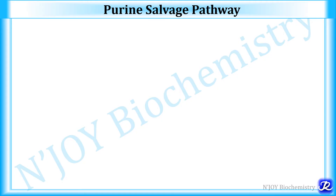What is the meaning of salvage pathway? It is the metabolic pathway that recycles important intermediates from materials that would otherwise be waste products. The purines that result from the normal turnover of nucleic acids, or the small amount obtained from the diet that is not degraded, can be converted to nucleoside triphosphate and used by the body. This is referred to as the salvage pathway for purines.